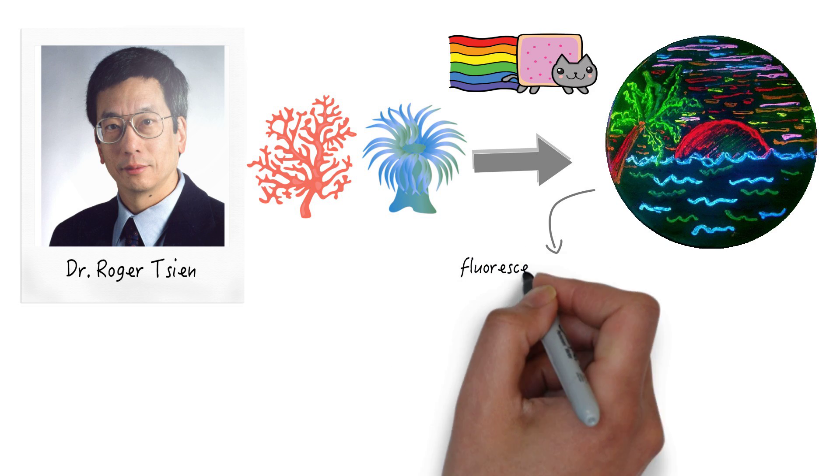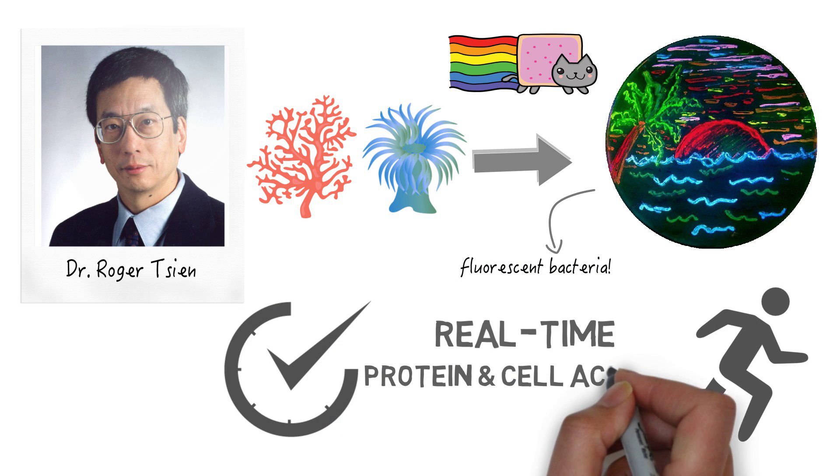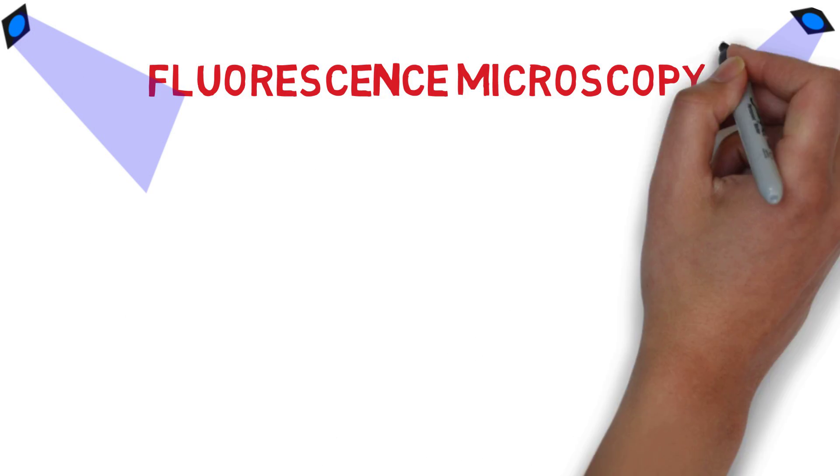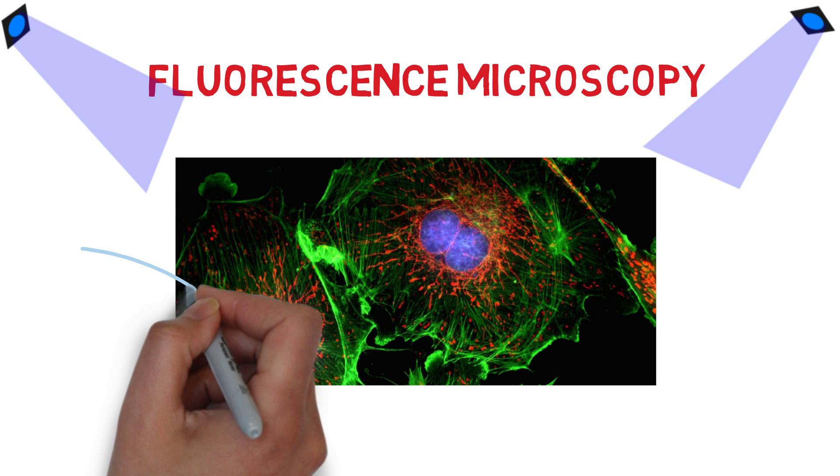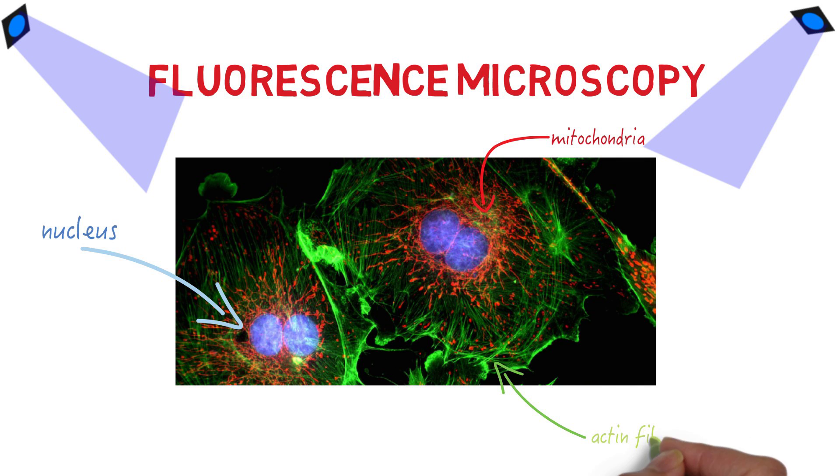GFP has been extremely widely used by scientists to analyze real-time protein and cell activity. Through fluorescence microscopy, where different types of light can be shone on the specimen, scientists can tag parts of the cell with different fluorescent dyes. In this picture, the nuclei are blue, mitochondria are red, and actin filaments are green.